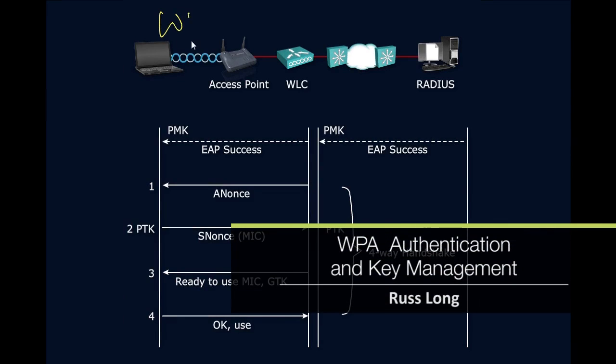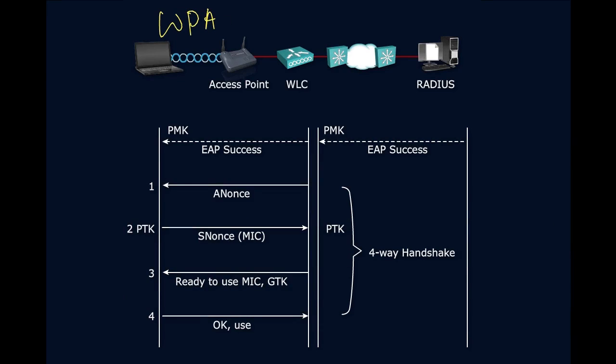Let's first look at the WPA process. This is WPA, not WPA2. WPA uses that four-way process just like WPA2 does. One thing about WPA — if you are using this older version of WPA, I recommend you use very long passwords. This has been known to be very susceptible to dictionary attacks and other forms of attacks. Anyone who has used Kali Linux or other penetration testing software will tell you it isn't that hard to break WPA if people are using short passwords. Longer passwords are better.